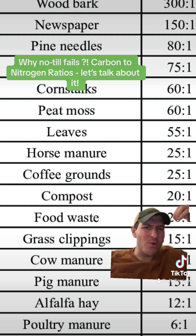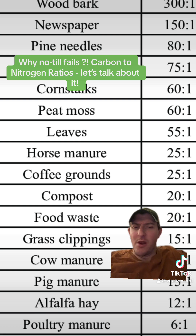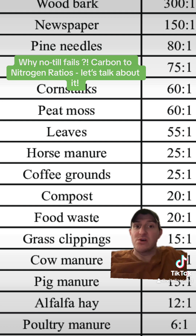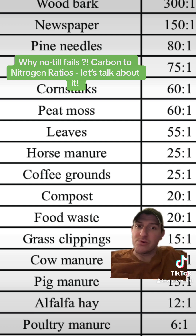Now, if you have a really high microbial biomass because you've been following a lot of no-till practices and carbon-nitrogen nutrient cycling and all of these different things, you might cycle corn stalks faster than somebody who doesn't. But still, relative to lower carbon-nitrogen ratio plants, it's still going to take longer to cycle.